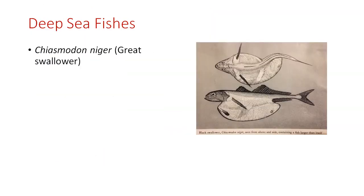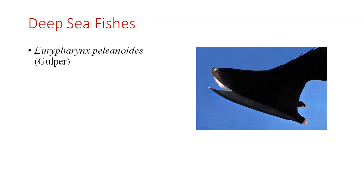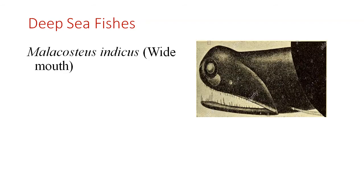I am going to mention some of the very important examples of deep sea fishes. Chiasmodon niger is a great swallower — you can see one of the deep sea fishes. Eurypharynx pelecanoides, also called the Gulper. Malacosteus indicus has a wide mouth, as you can see.